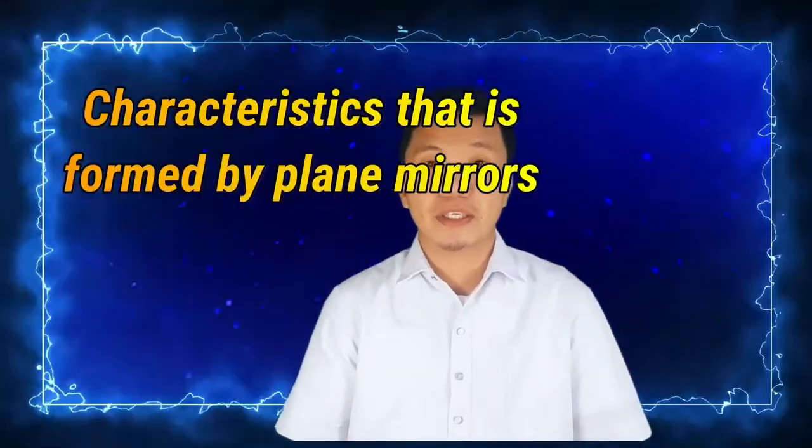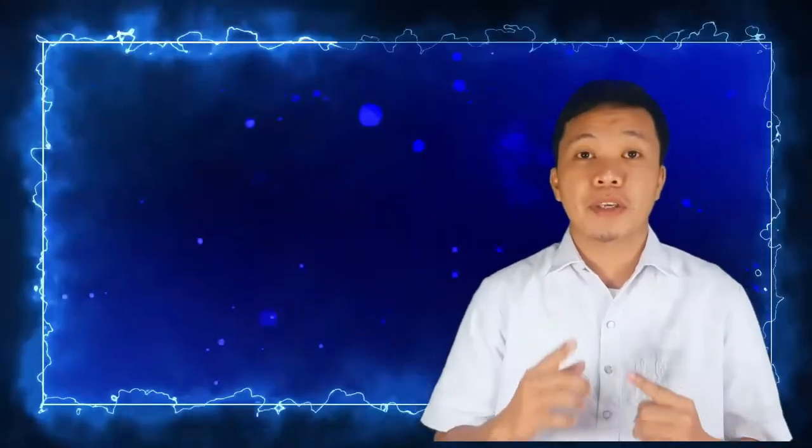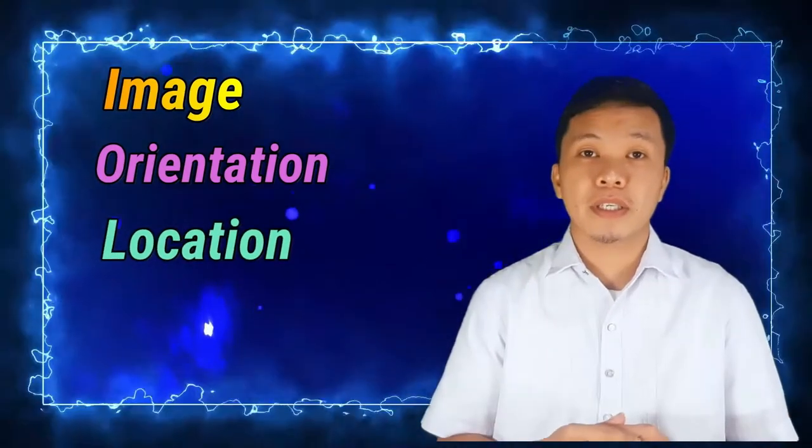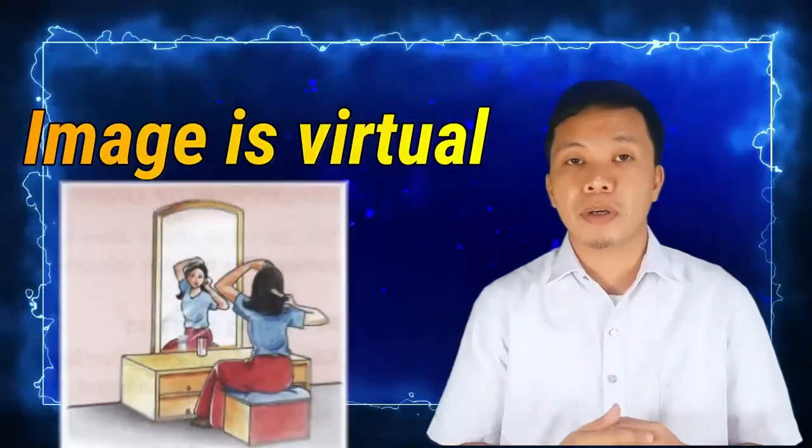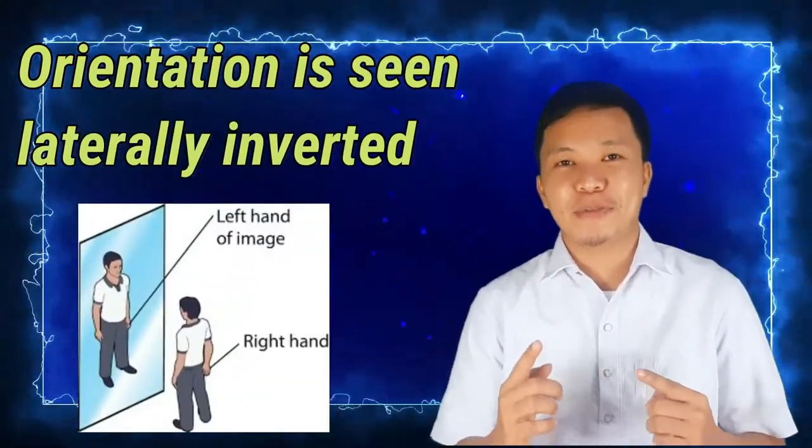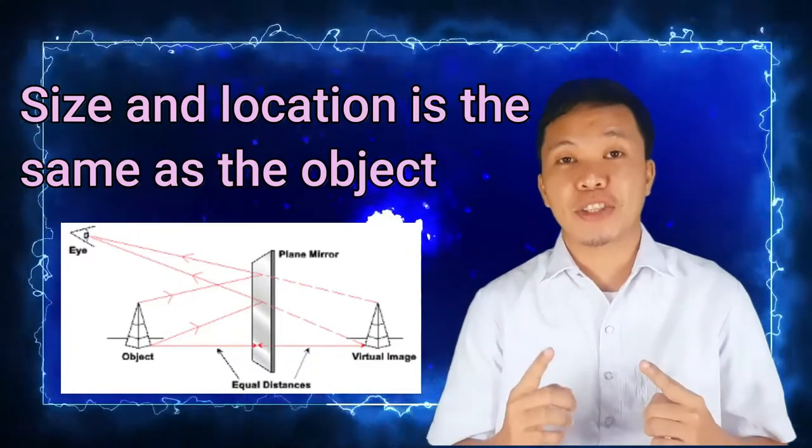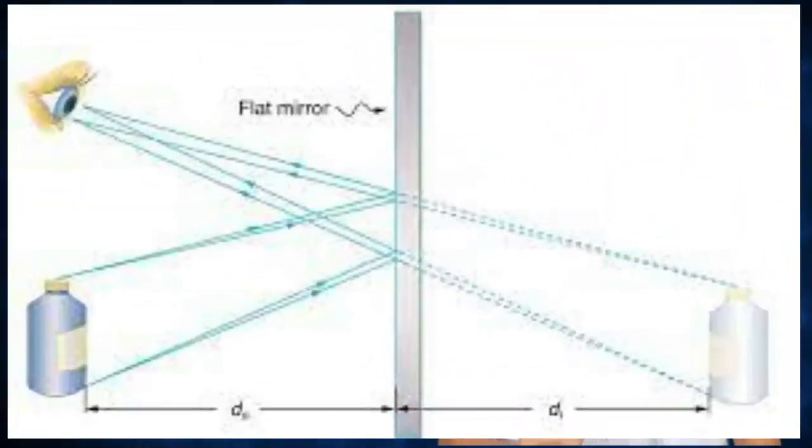Now, this time let us talk about the characteristics that are formed by plane mirrors. These are the image, orientation, location, and size or the magnification. In a plane mirror, the image that you see is virtual. The orientation in a plane mirror is seen laterally inverted. The image that is formed is of the same size and the same distance as the object. So if you are 2 feet away from the mirror, then the distance of your virtual image and the mirror is also 2 feet. In other words, the image and the object in the plane mirror have the same characteristics except that the image is seen laterally inverted.